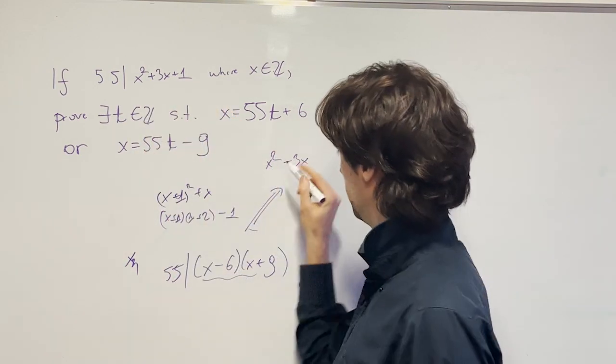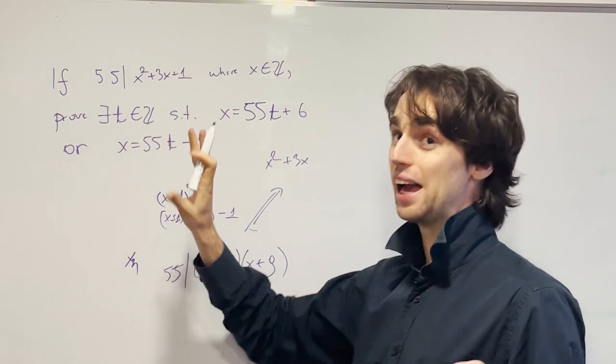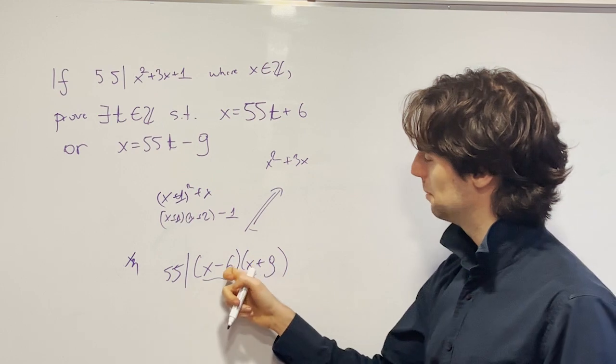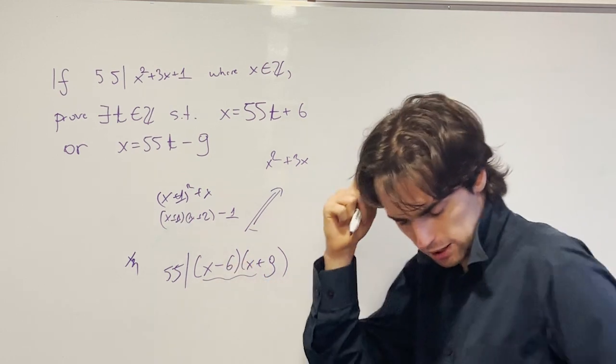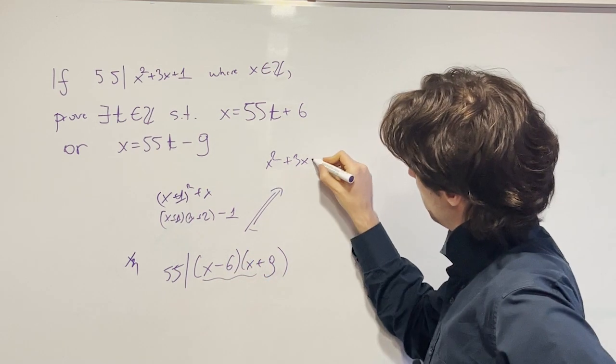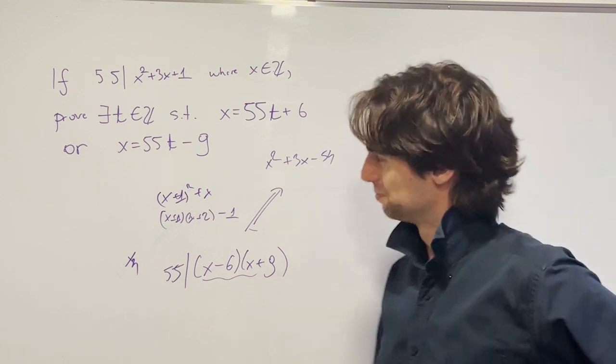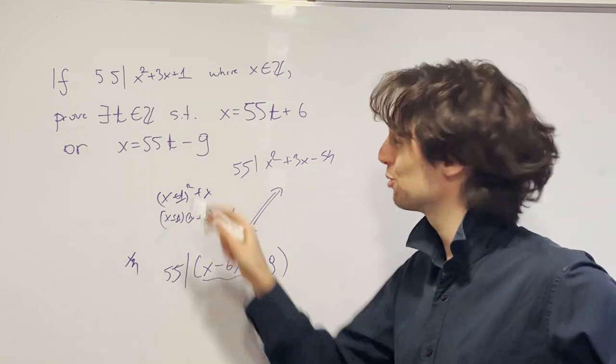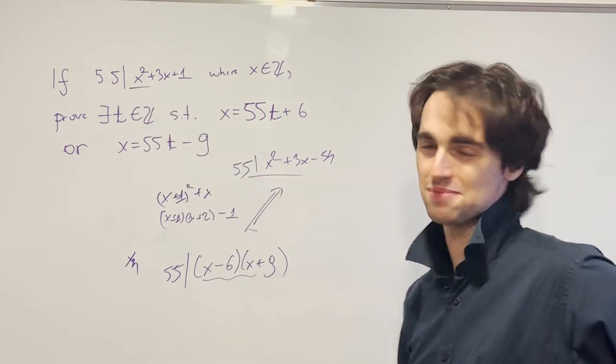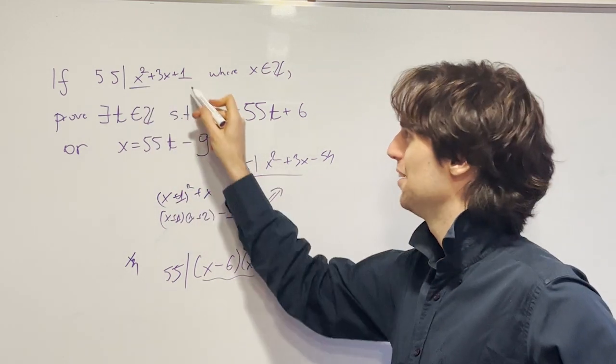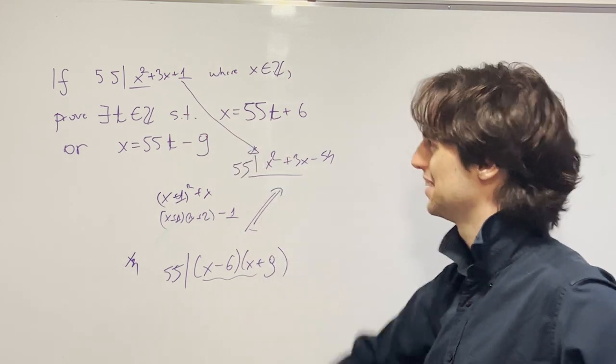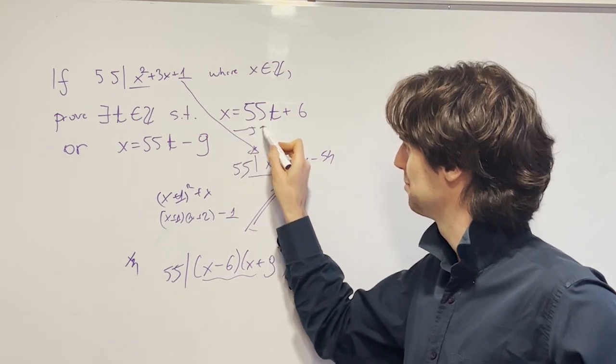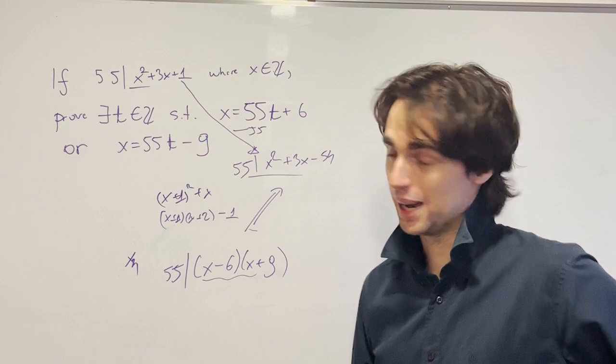So we have the 3x and then minus 6 times 9, that's going to be minus 54. We need to get this from this, we need to get here. How do we get there? Well, we subtract 55 here, which we can.